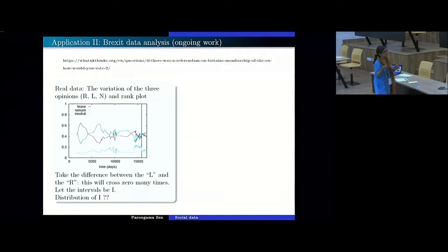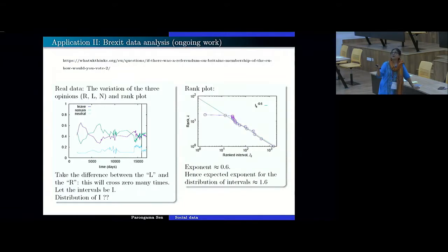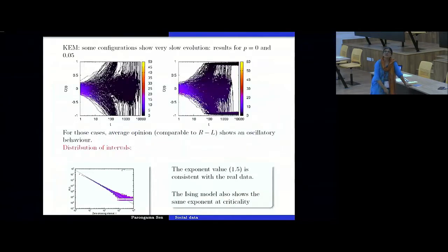Okay. And then we found out what and there will be some time intervals and we wanted to find out the distribution of these time intervals. So because the data points are few in number, we looked at the rank plot and it gives power law variation with an exponent 0.6 from where one can guess that the distribution exponent will be 1.6. So once again we used the kinetic exchange model and there we found that there are some configurations which do not reach equilibrium very fast. They are stuck into some metastable states and for those we also find such an oscillatory behavior if we plot R minus L and that distribution varies as a power law again with an exponent 1.5, which is pretty close to what we get from the real data.